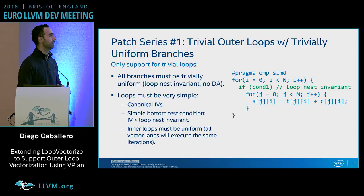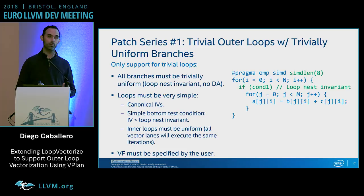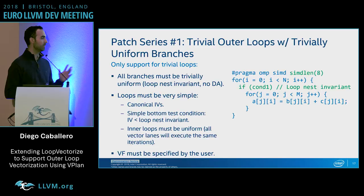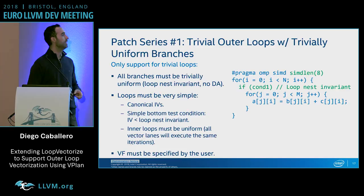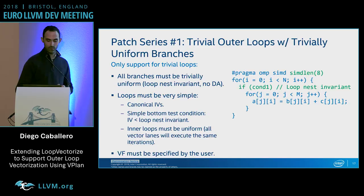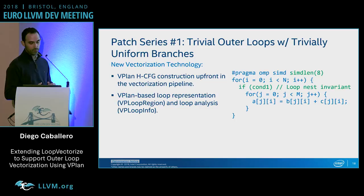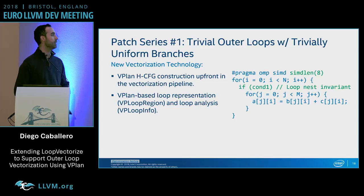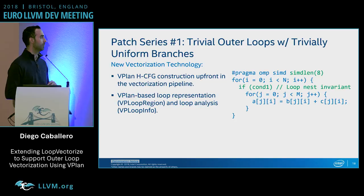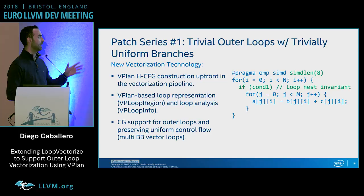Very important: at this point we won't have cost model support to determine the vectorization factor, so the VF must be specified by the user with a pragma such as simd length or a flag. The vectorization technology introduced here includes building the hierarchical CFG up front in the vectorizer pipeline, support to represent loops using regions, loop analysis on top of the plan, and code generation changes to generate code for outer loops while preserving uniform control flow.